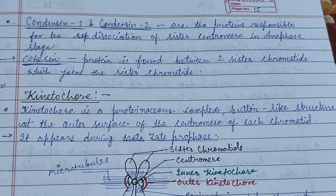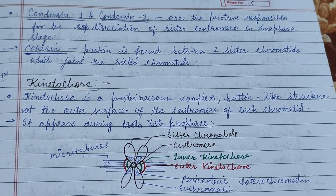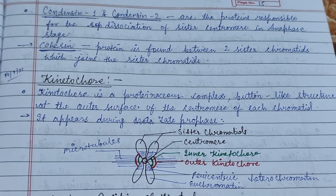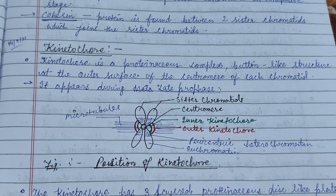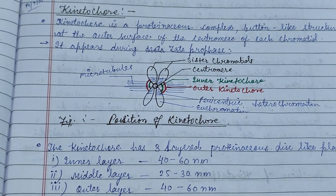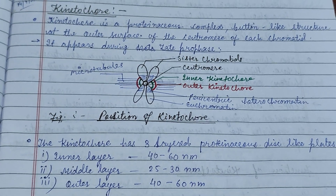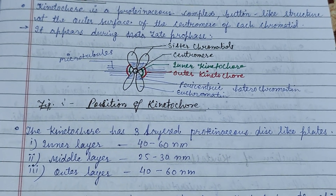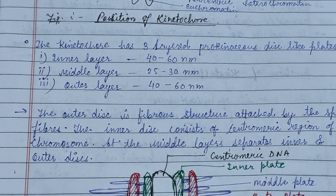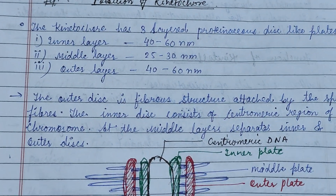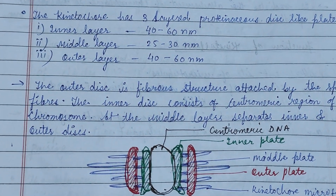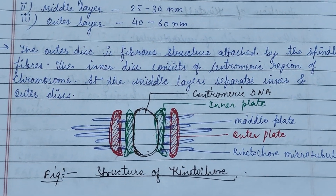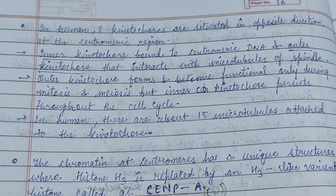The kinetochore is a protein complex with a button-like structure on the outer surface of the centromere of each chromatid. It appears during late prophase. The kinetochore has a three-layered protein structure, just like a plate, consisting of an inner layer, a middle layer, and an outer layer.